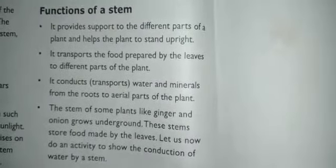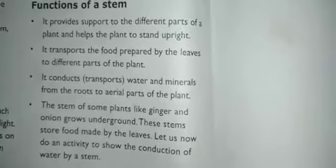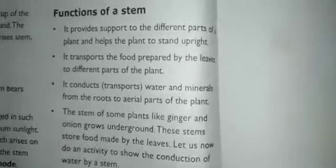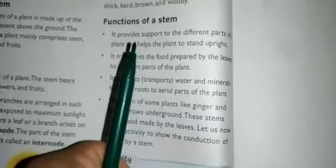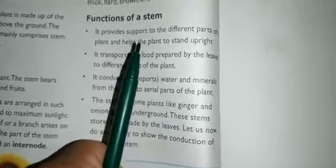Next are the functions of a stem. The stem provides support to the different parts of a plant and helps the plant to stand upright. It also transports the food prepared by the leaves to the different parts of the plant. You know that photosynthesis takes place in the leaves, so the food is transported to different parts of the plant by the stem.